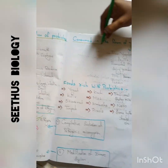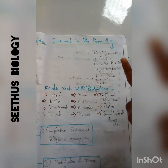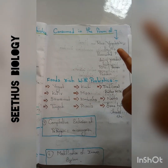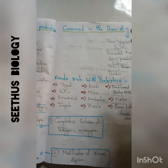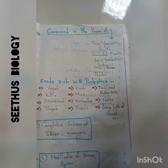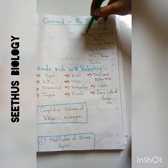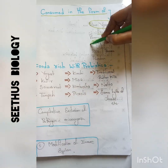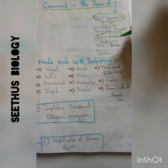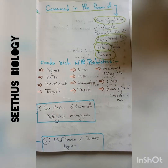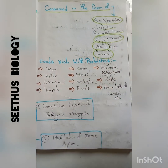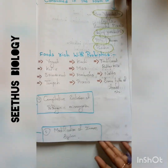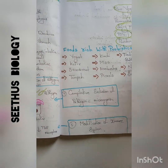Coming to the forms in which we consume probiotics: they can be consumed as raw vegetables, raw fruits, fermented and pickle forms, dairy product forms, pill forms, and powder forms.